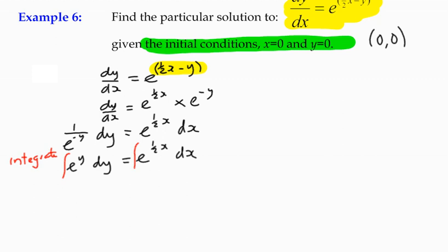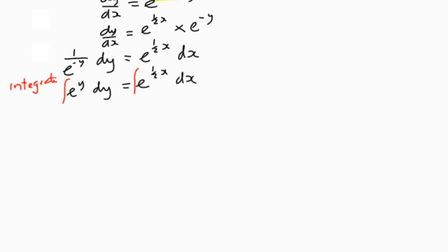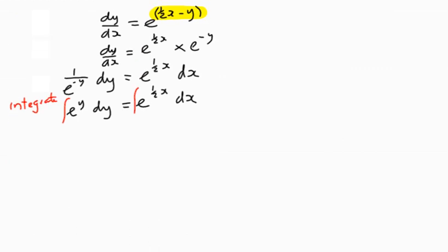Let's keep that at the top. So the integral of e to the y with respect to y just becomes e to the y, and we'll get e to the half x. Integrate with respect to x, so it still becomes e to the half x. We're integrating, so divided by the derivative of the inside function, which is a half, plus c.